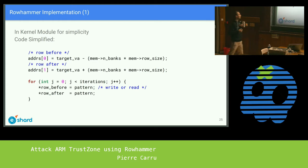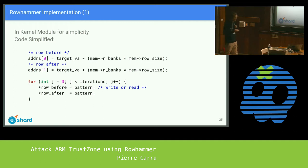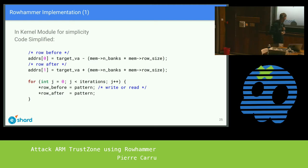The algorithm of Rowhammer is pretty simple — you just access the rows in a loop. After a number of iterations, some bits in the rows before and after the target row will be corrupted if the device is vulnerable.